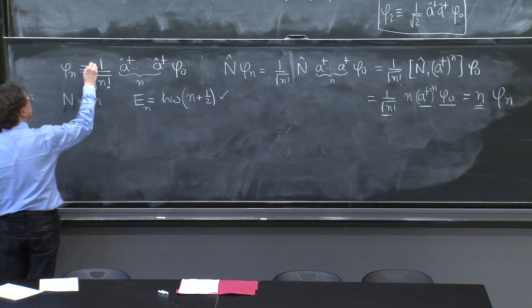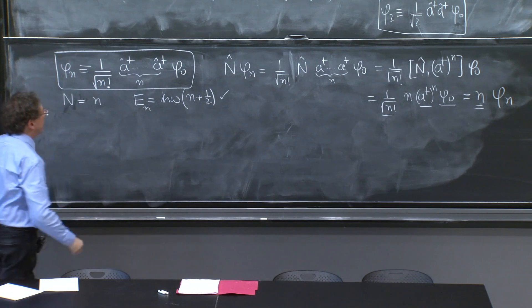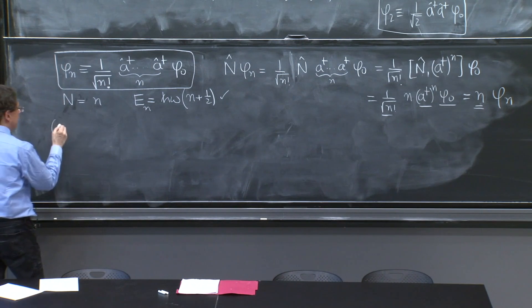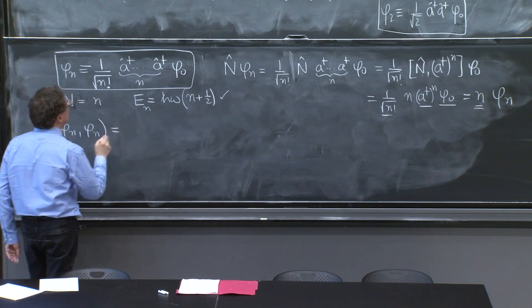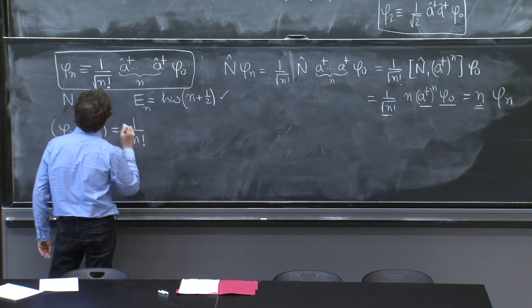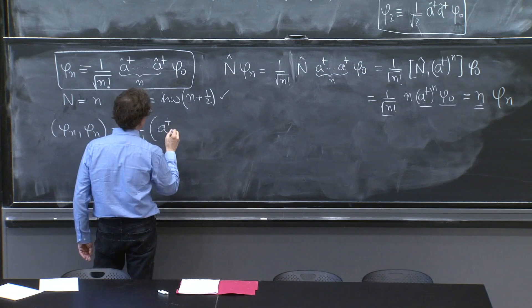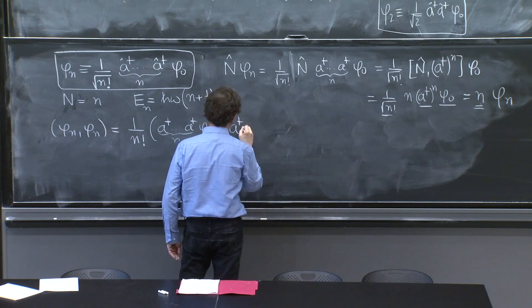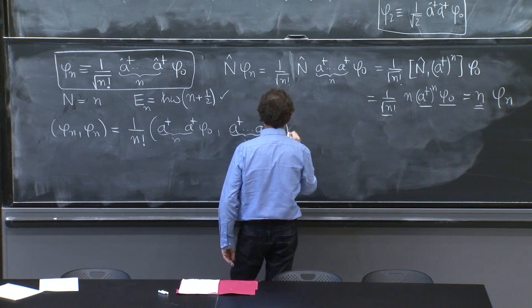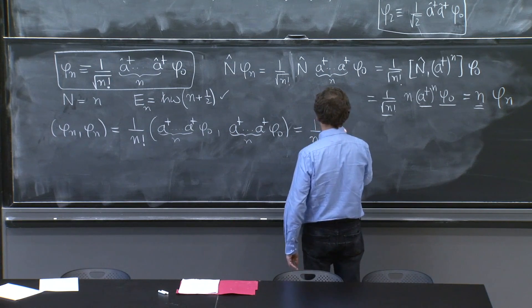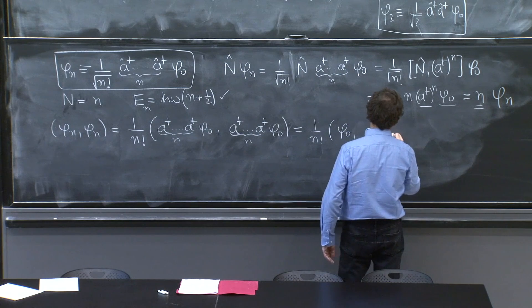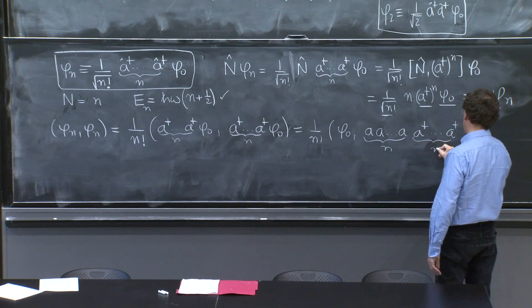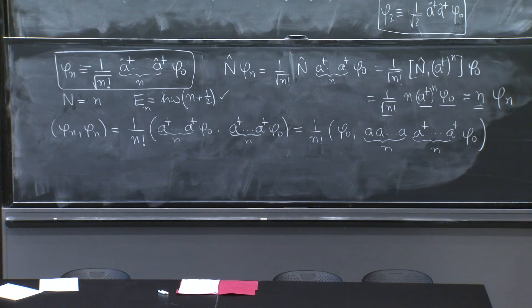And then this is the definition. And the last thing you may want to check is the normalization. Let me check it. I think this is a full derivation. Phi_n with phi_n would be two factors of those. So I would have 1 over n factorial. A dagger n of them on phi_0. A dagger n of them again on phi_0. So then that's equal to 1 over n factorial phi_0. A, lots of a's, n of them. And a daggers phi_0, like that. That's what it is.